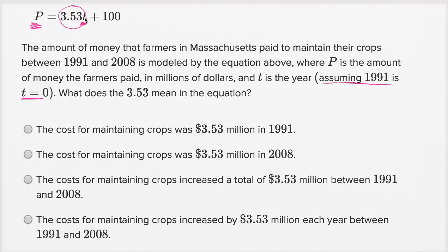Now, as t increments, each time t increases by one, the amount that the farmers pay is going to increase by 3.53 times one. So one way to think about it is this is the rate of increase from year to year. As t goes up a year, the amount the farmers pay is going to increase by 3.53 million dollars.